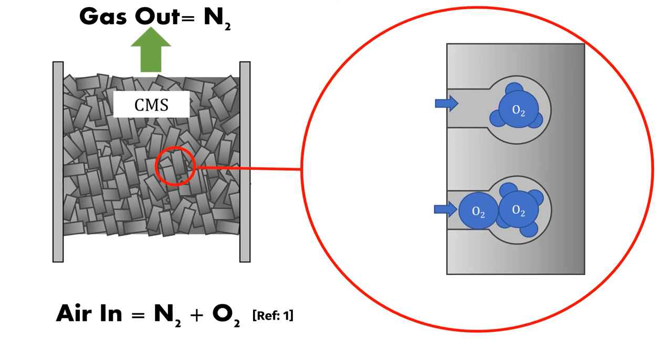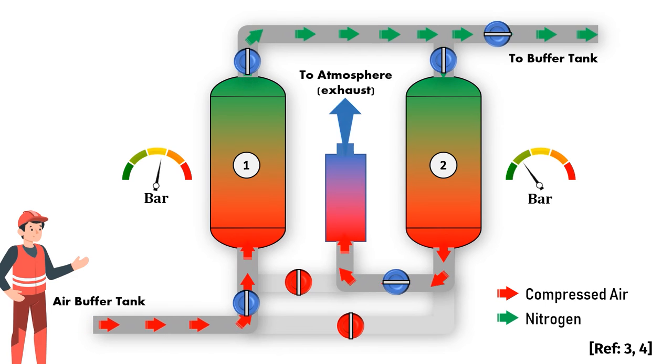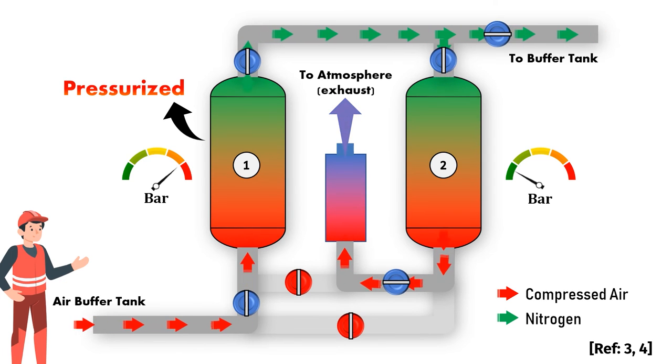At first, clean and dry compressed air enters Tower 1 and goes through the process mechanism in CMS. This phase is called the separation phase. Most of the nitrogen produced in Tower 1 exits the system to the storage buffer tank, while a small portion of the generated nitrogen flows into Tower 2 in the opposite direction.